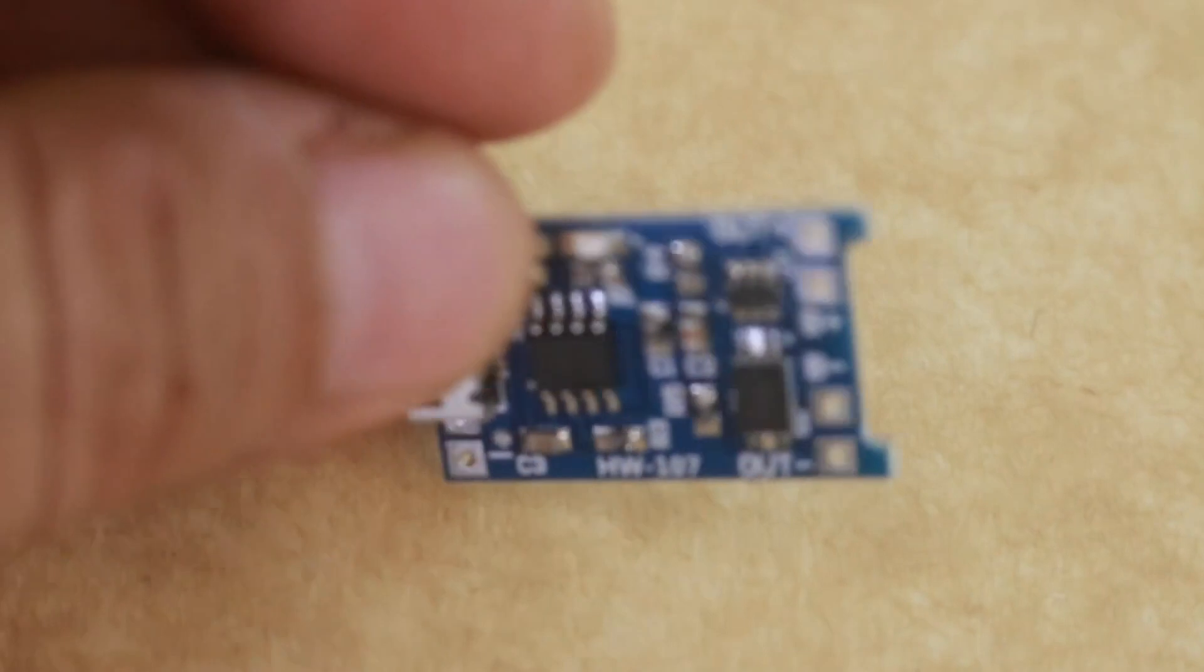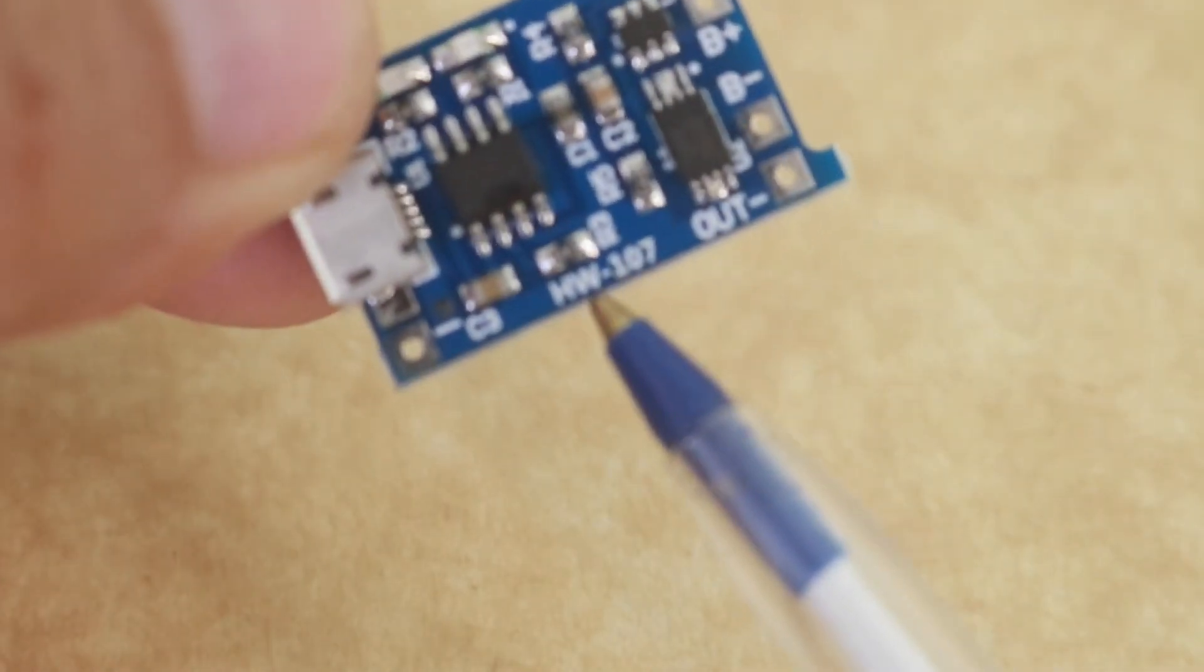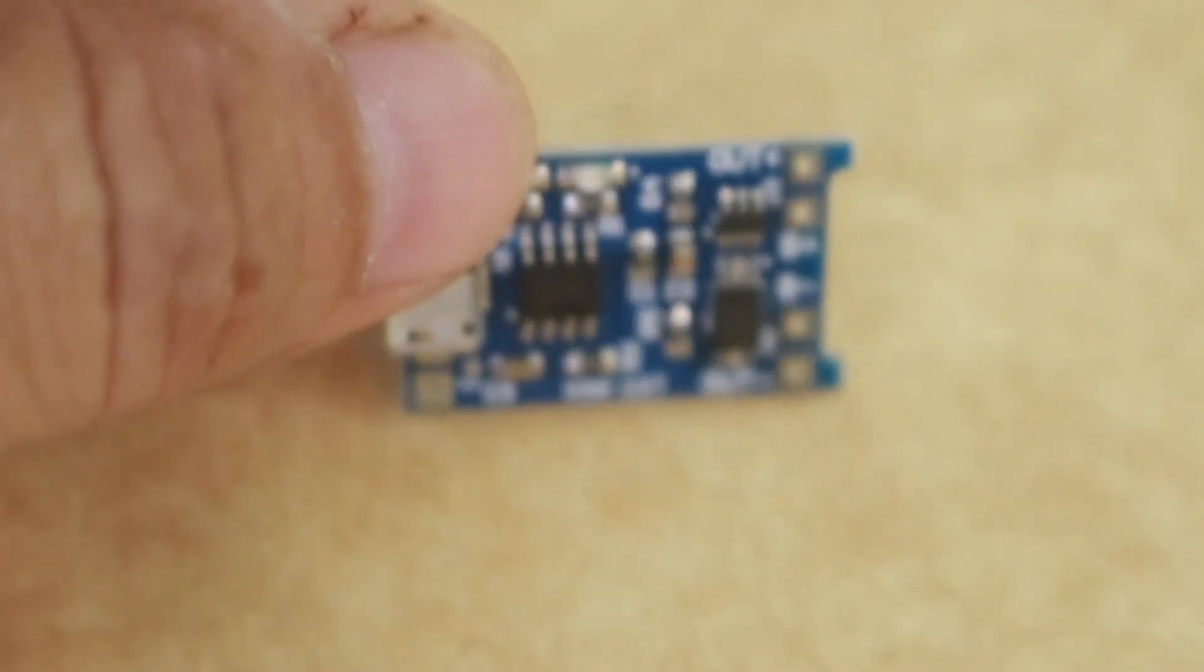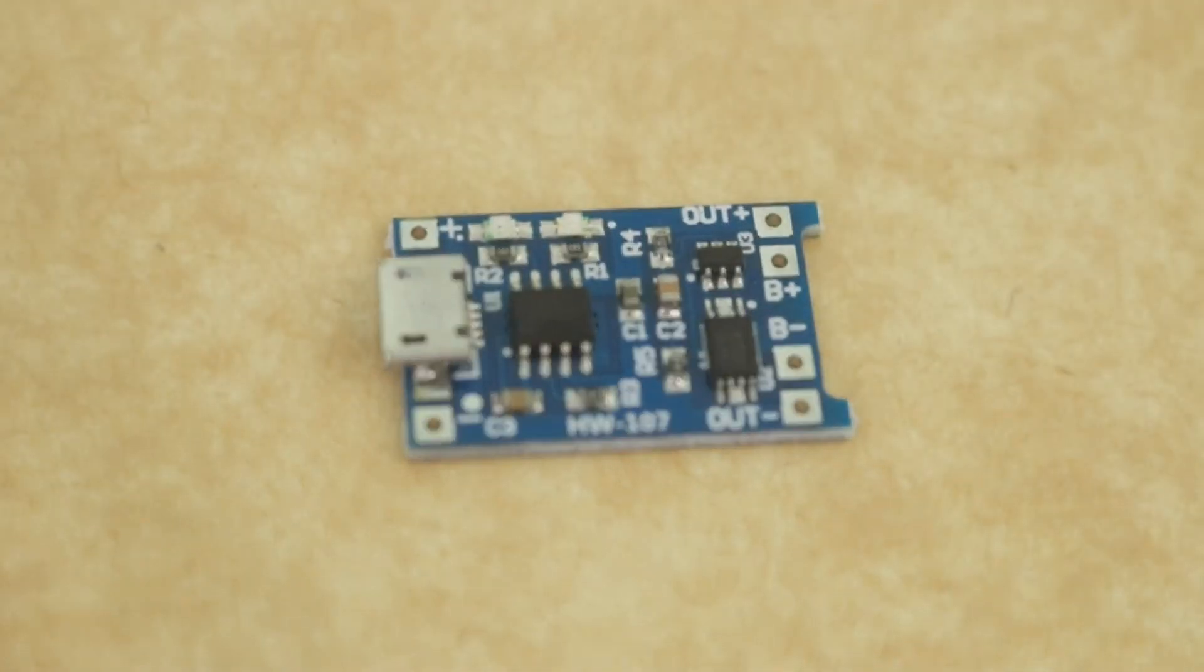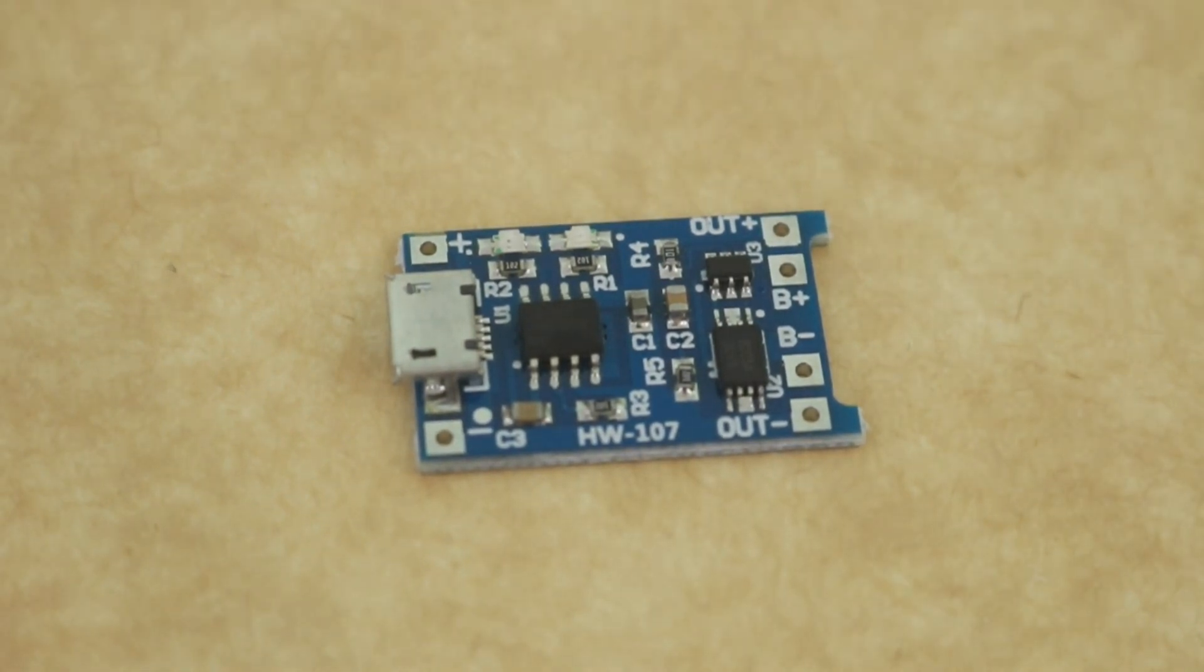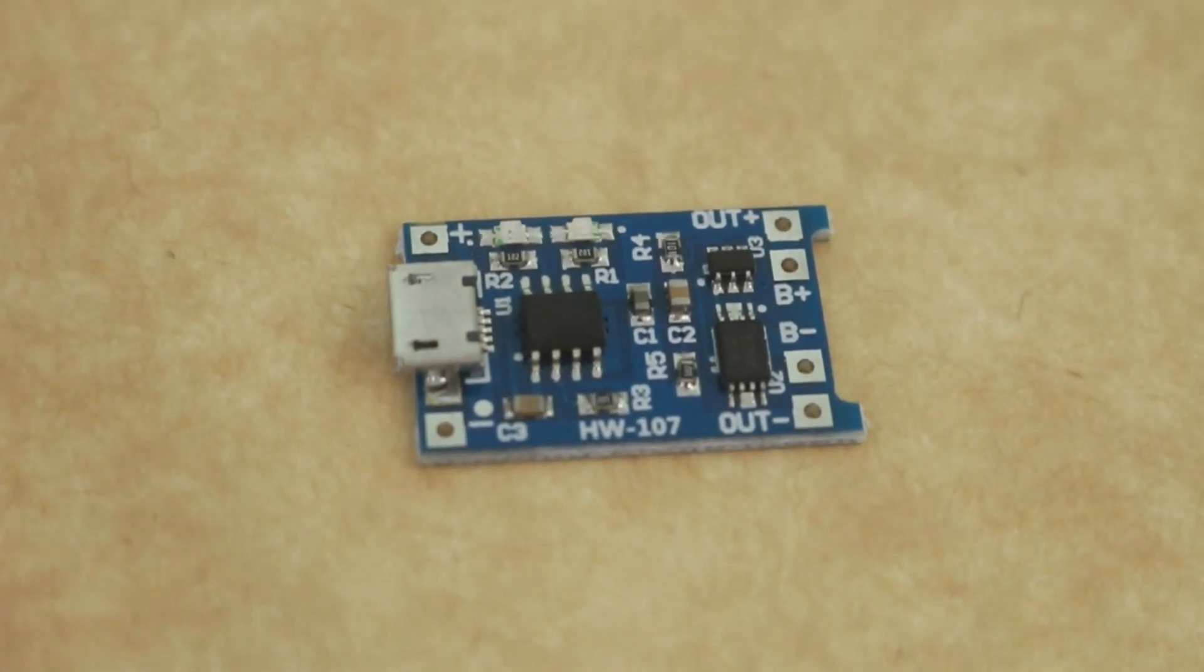Now this resistor is located here. It is marked R3. What you need to do is remove the resistor and connect another resistor according to the table to manage the charge that you need for your battery.